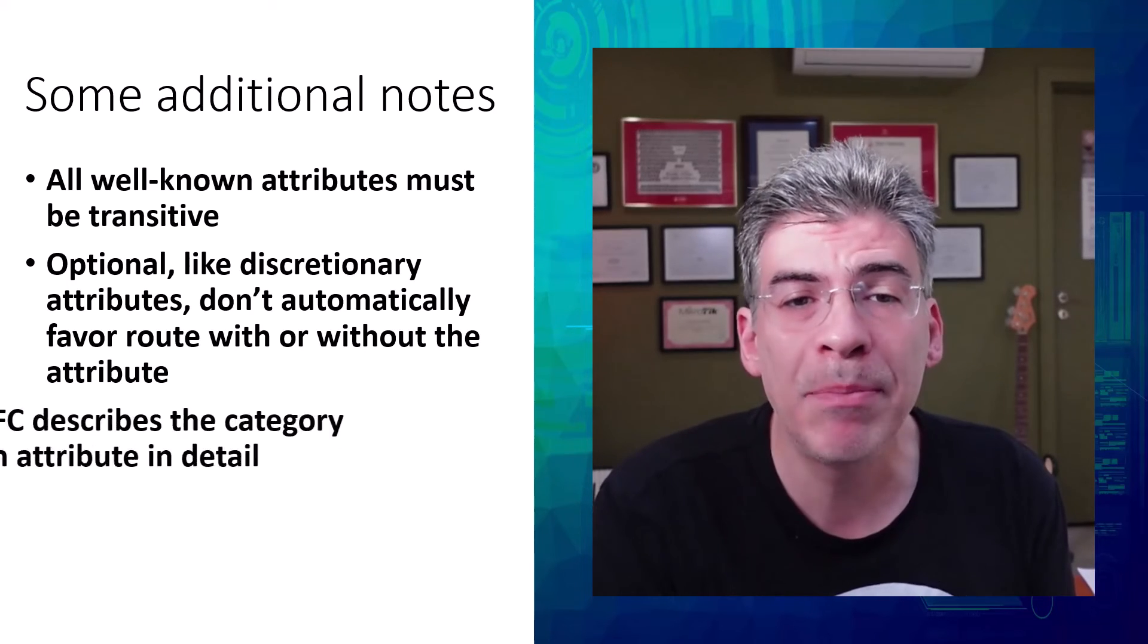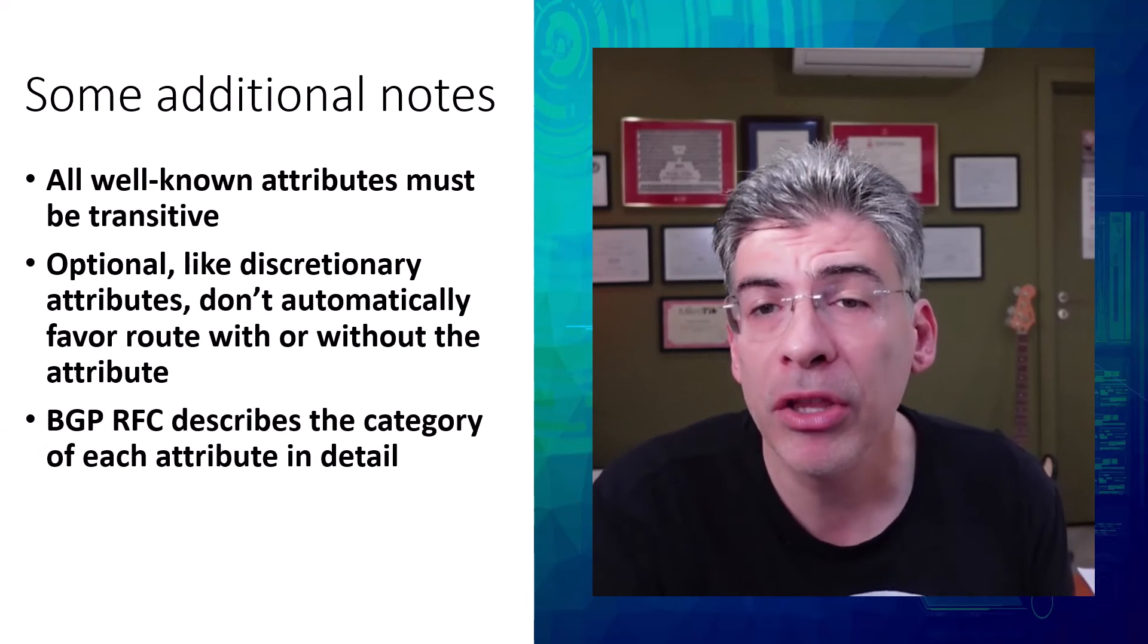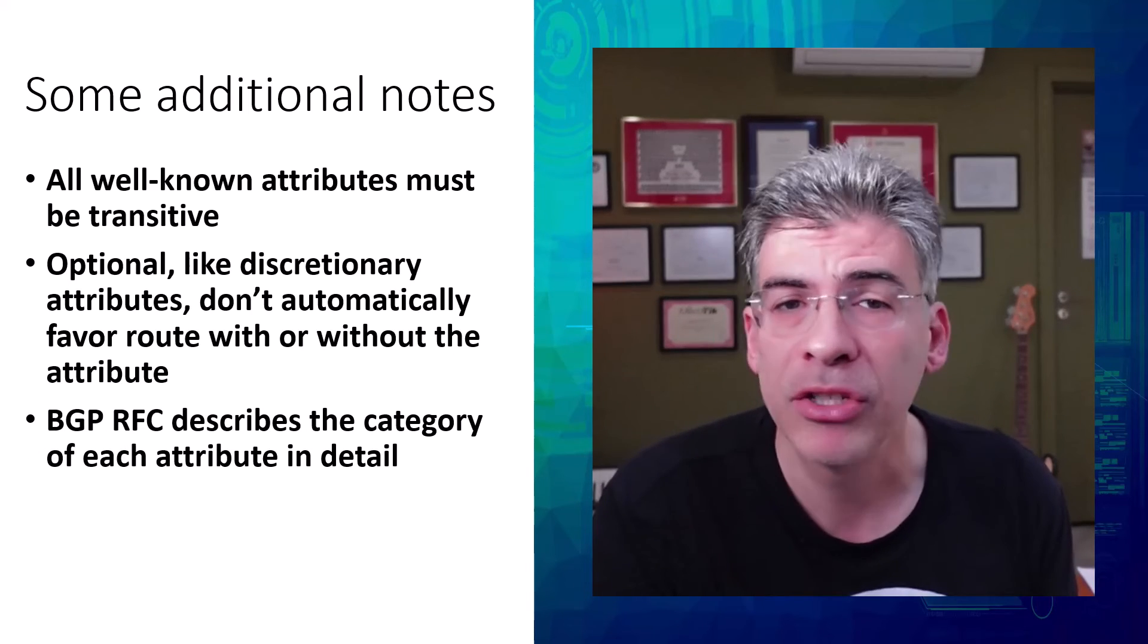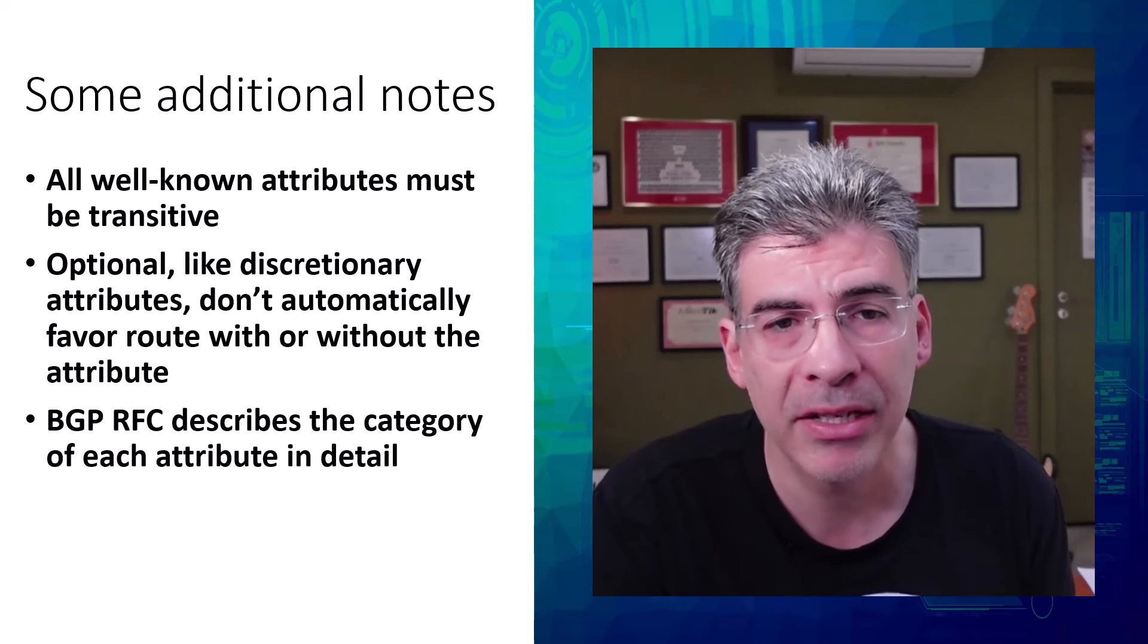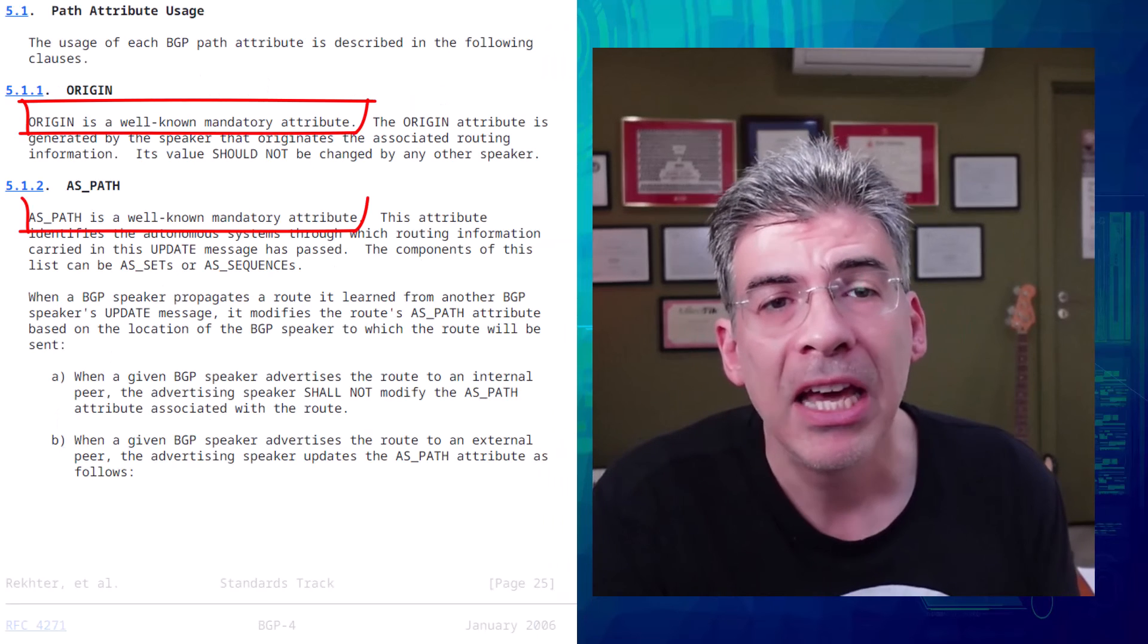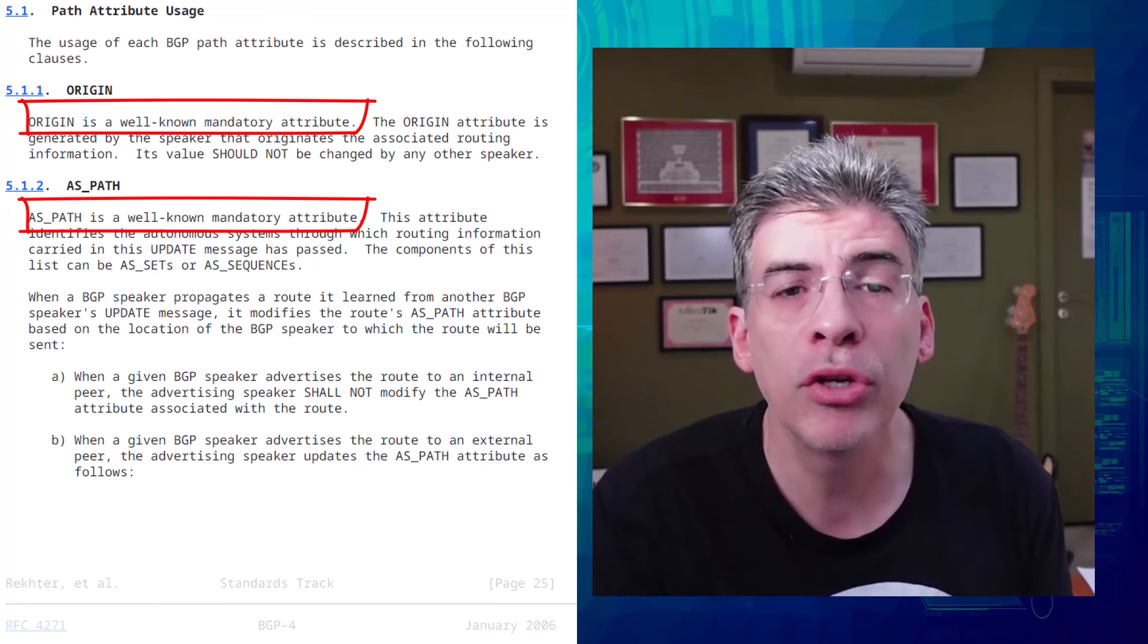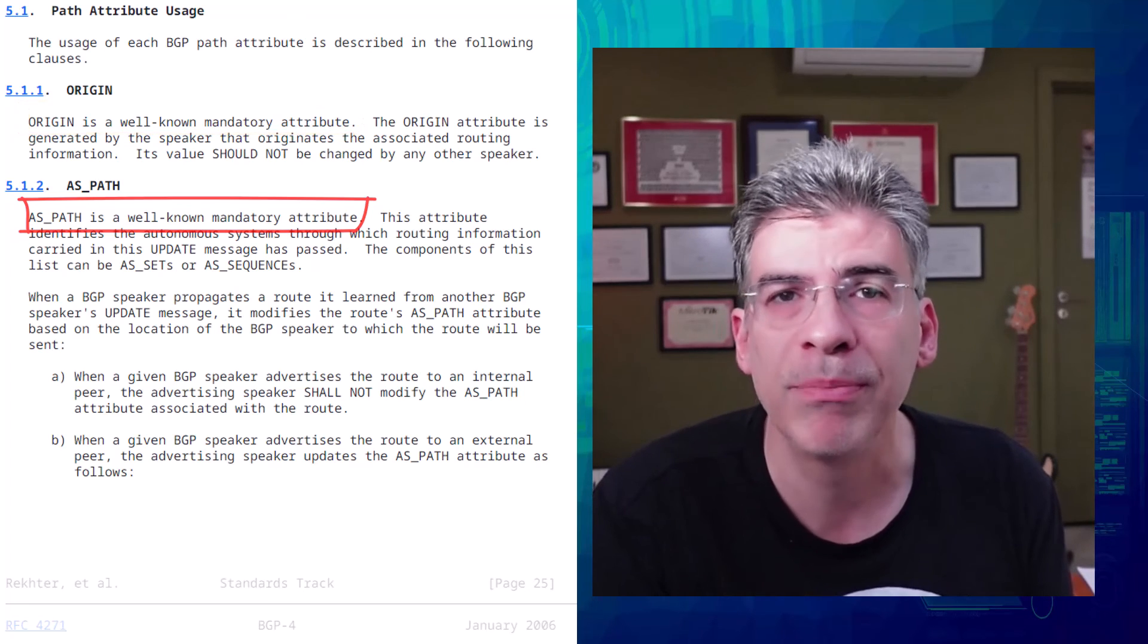Also, we can see in the BGP RFC, it describes each attribute in detail and it states whether those attributes are mandatory, discretionary, optional, transitive, or non-transitive. And you can see that here in this excerpt from the BGP RFC. You can find a link to this official RFC definition of BGP in the description below.